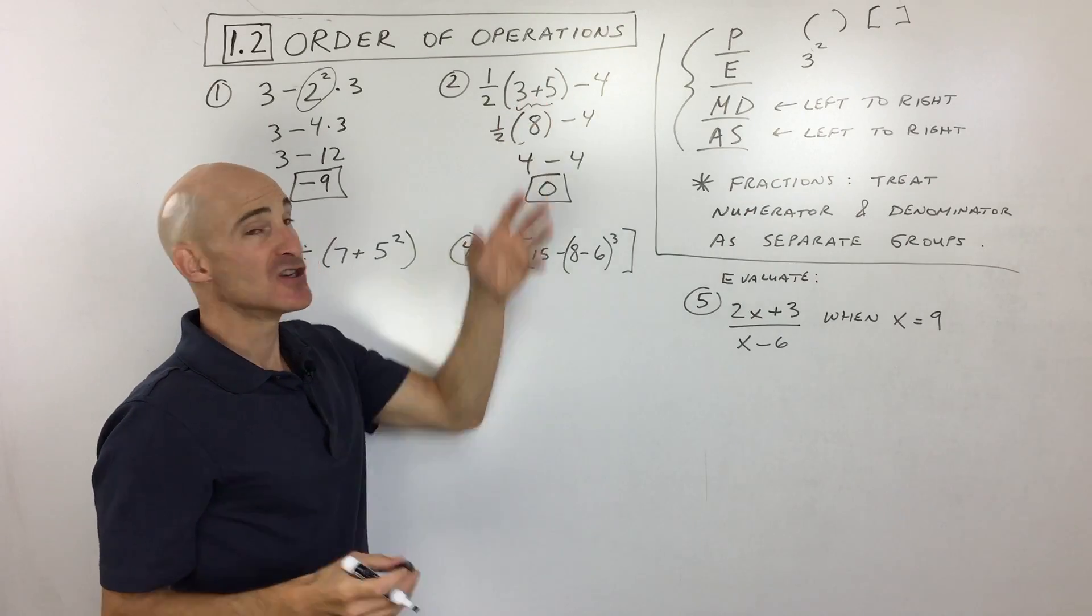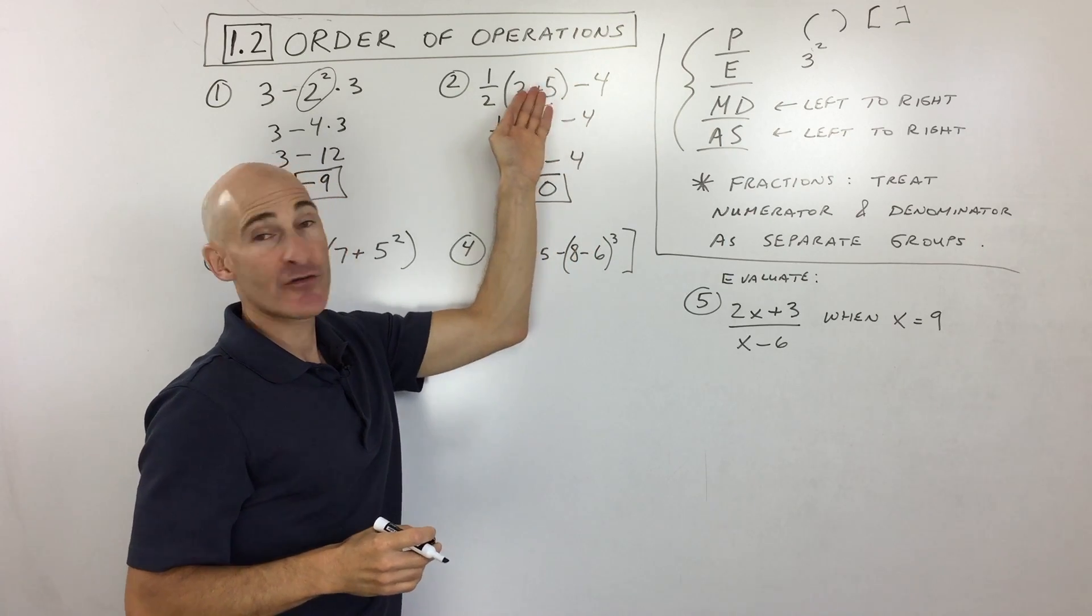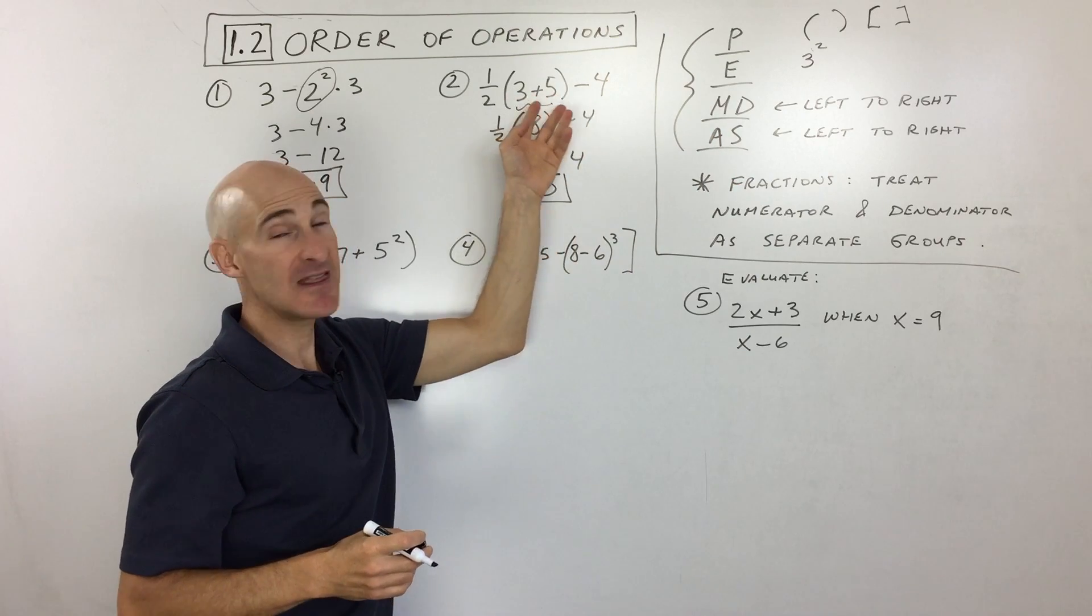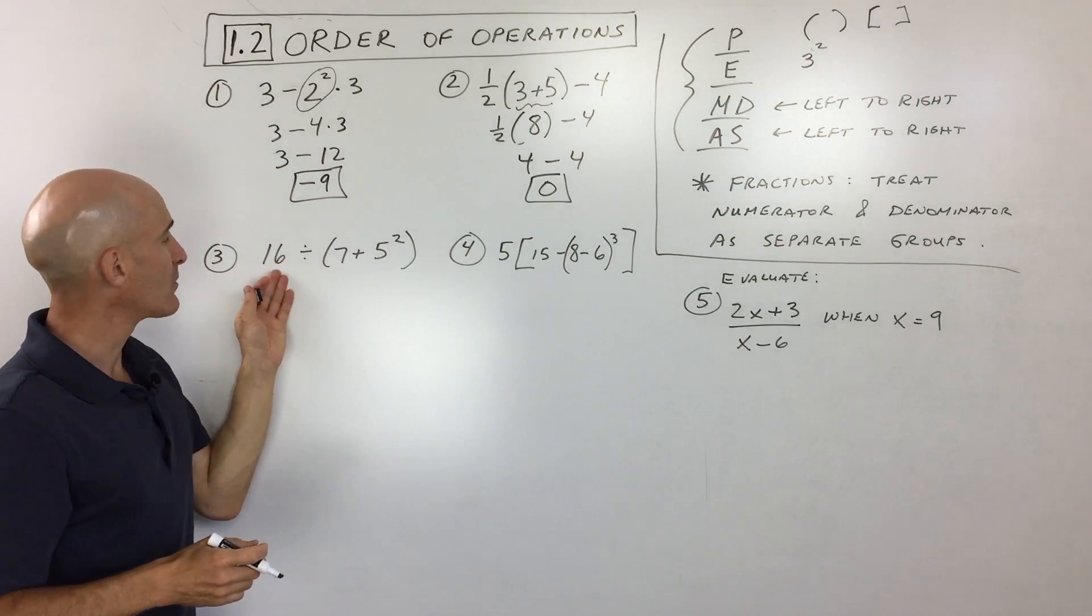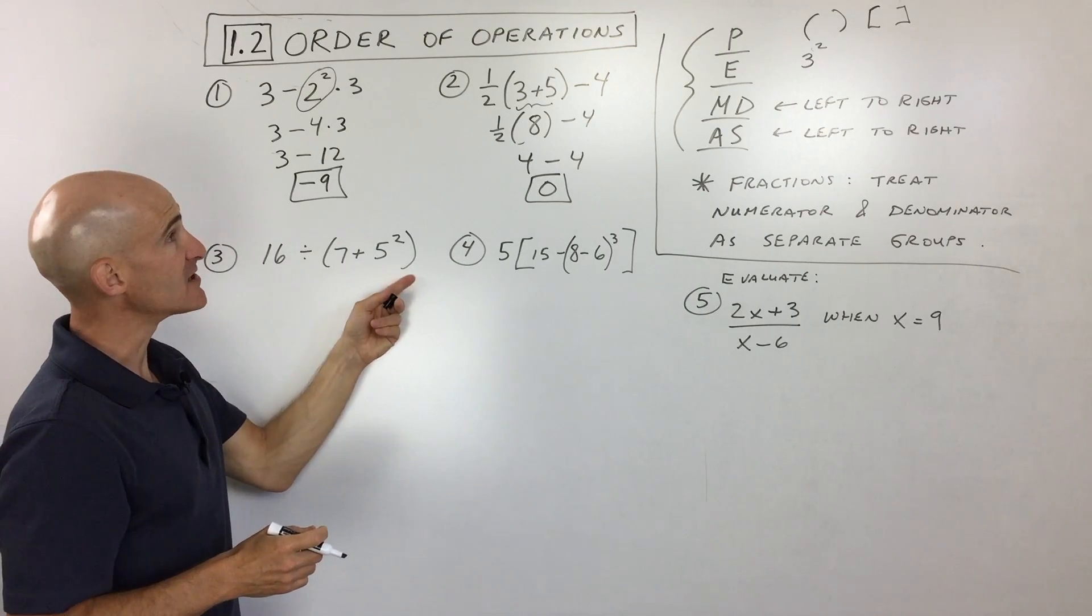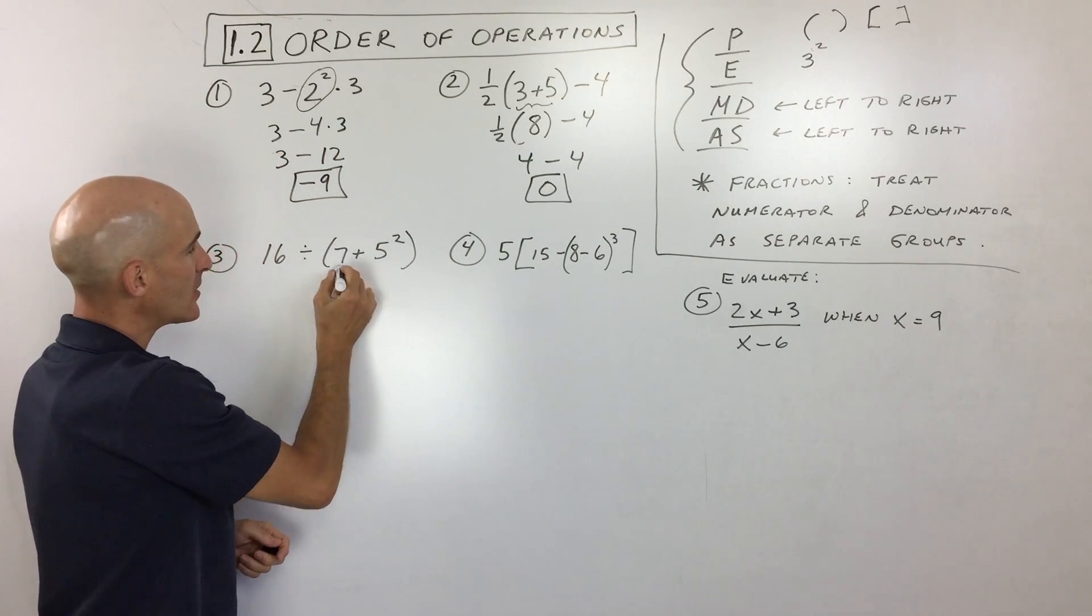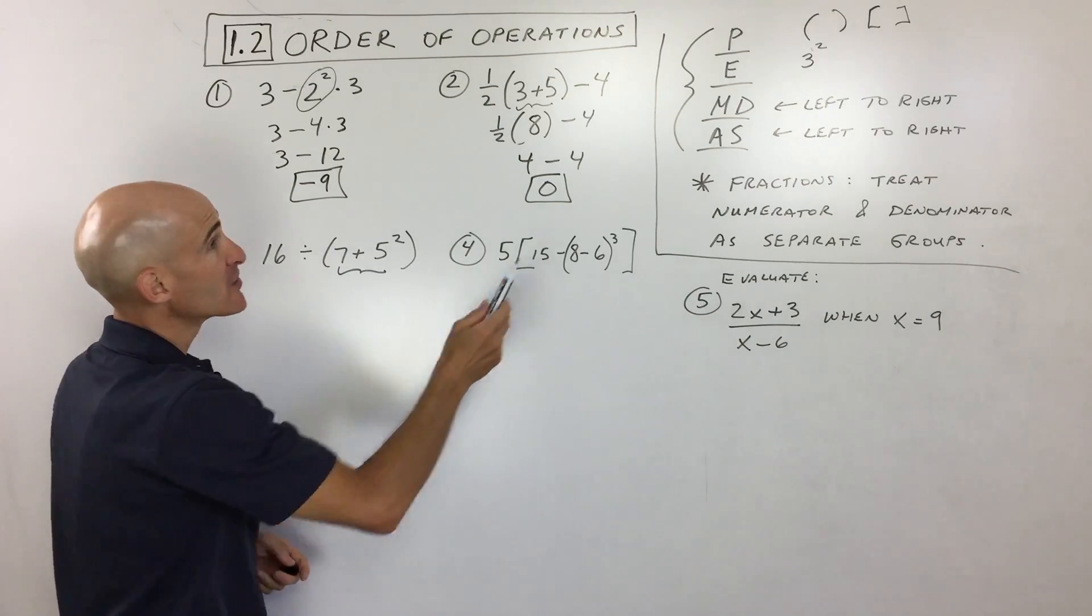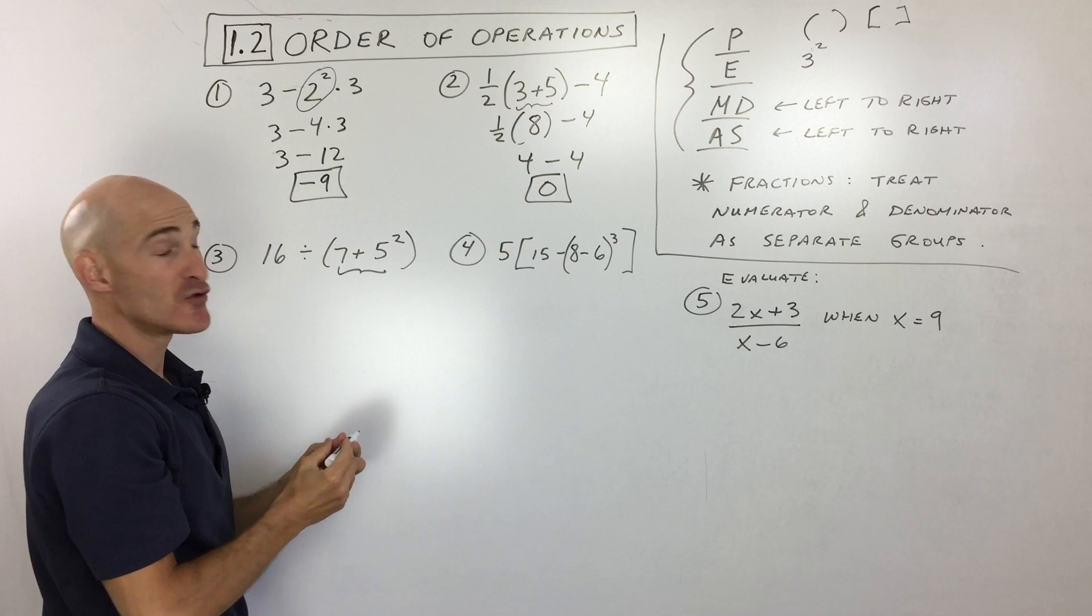When it comes to parentheses, you work inside those parentheses, but if there are multiple operations, you still follow the order of operations, PEMDAS, within the parentheses. Let's go to example three. We've got some parentheses, so that's our first step. What's the most important thing here? Is it adding? No, exponents comes before adding. We have 5², so we do that part first.